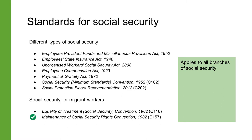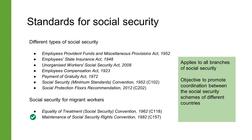The Maintenance of Social Security Rights Convention of 1982, which is Convention 157, applies to all branches of social security regardless of the type of scheme. It provides for social security rights and benefits for migrant workers who face the problem of losing entitlements to benefits enjoyed in their country of origin. Its objective is to promote a flexible and broad form of coordination between the social security schemes of different countries. India has not ratified this convention.